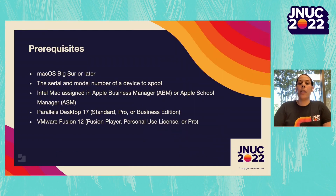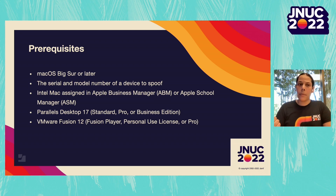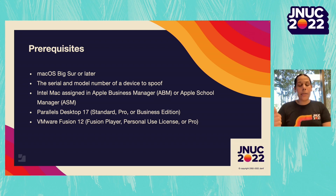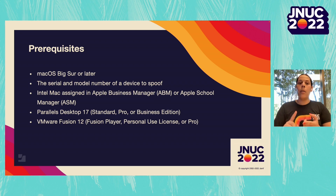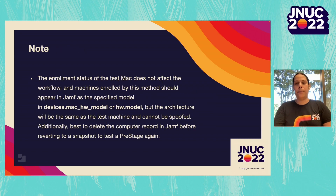Here are all the prerequisites we're going to need for this workflow. We're going to need macOS Ventura or later. We're going to need a serial and model number of the device you're trying to spoof. An Intel Mac assigned to Apple School Manager or Business Manager. Parallels Desktop 17 with either Standard, Pro, or Business Edition. And VMware Fusion 12 with either Fusion Player, Personal Use License, or a Pro License.